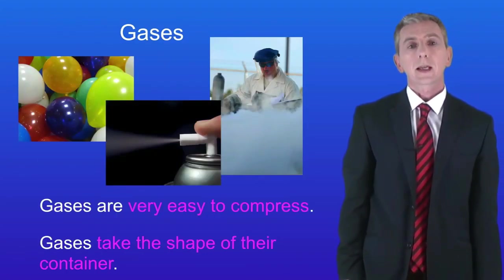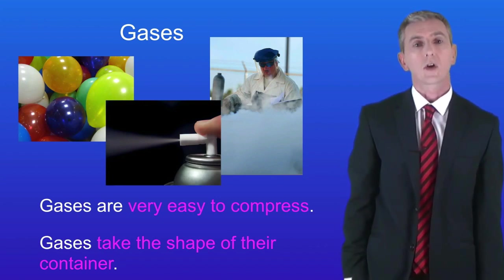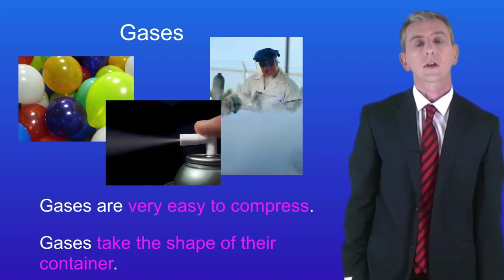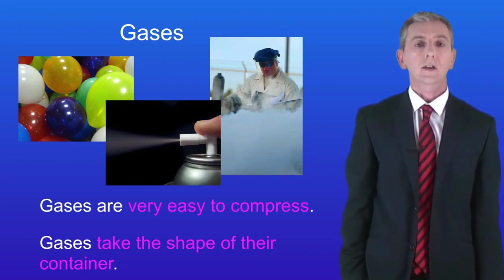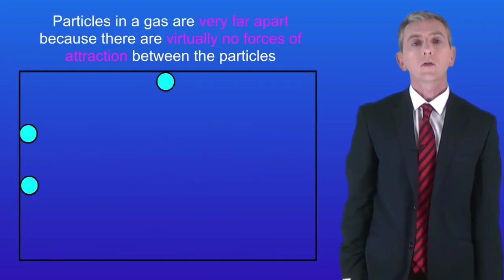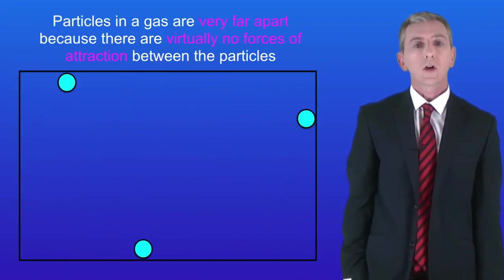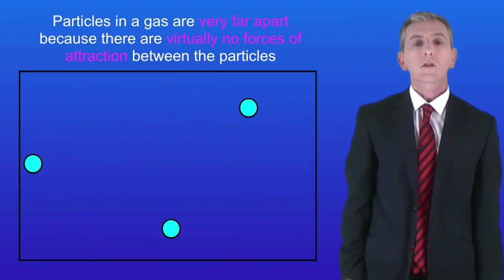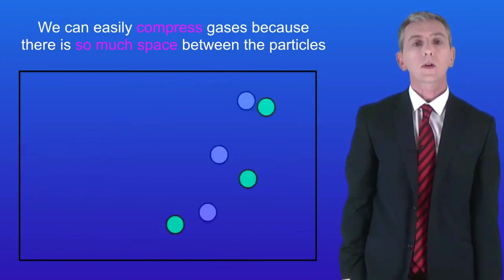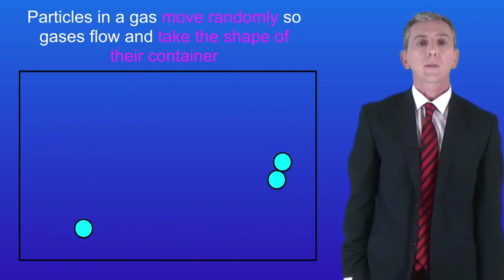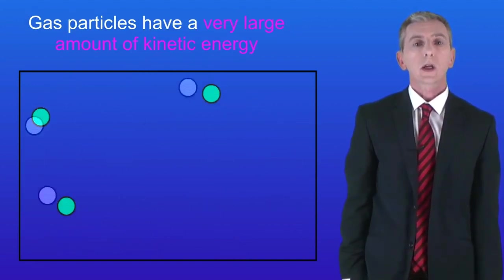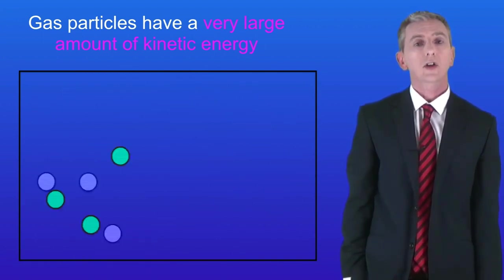We are going to take a look now at gases. Gases are very easy to compress and we can see this with an aerosol. An aerosol contains gas that has been compressed and when we press the top of the aerosol the gas is released. The second property of gases is that they take the shape of their container and they move and flow. First of all the particles in a gas are very very far apart — much further apart than I can really show in this diagram — because there are virtually no forces of attraction at all between particles in a gas. This means that we can easily compress gases because there is so much space between the particles. The second key point is that gas particles move randomly, so gases flow and can easily take the shape of their container. Because gas particles are moving rapidly, the gas particles have a very large amount of kinetic energy.